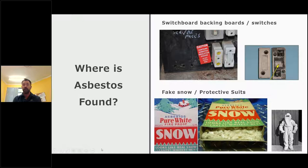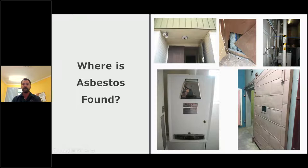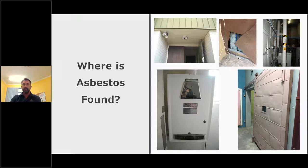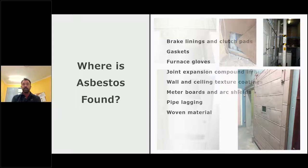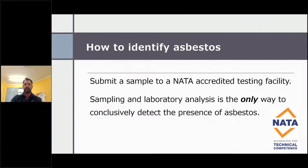Asbestos has been found in a lot of materials, not all of which are commonly known. Up in the ceilings, behind other material — which always makes it hard when you're consulting your register and it hasn't been destructively sampled and you knock through something else and find it. Safe doors. Brake linings and clutch pads. Gaskets. Furnace gloves. Joint expanders.